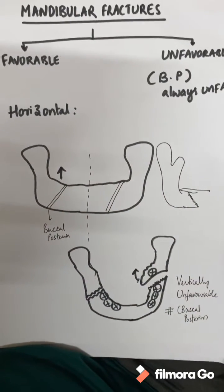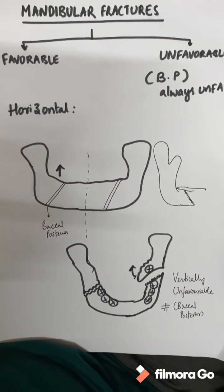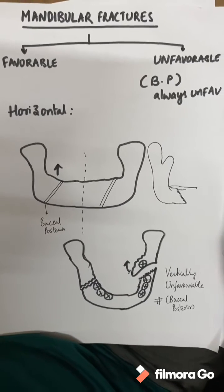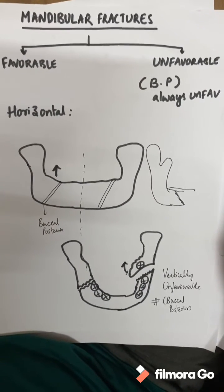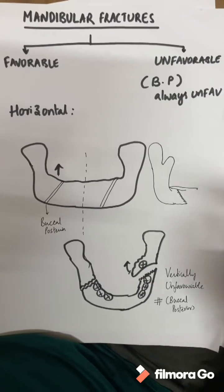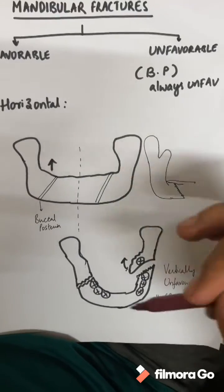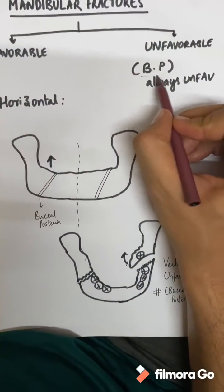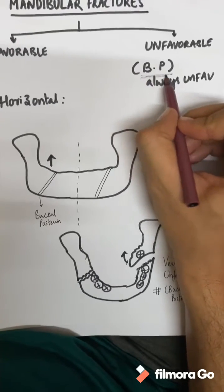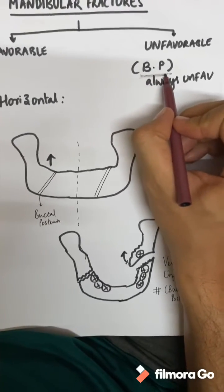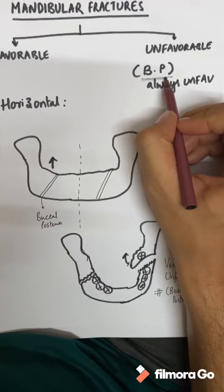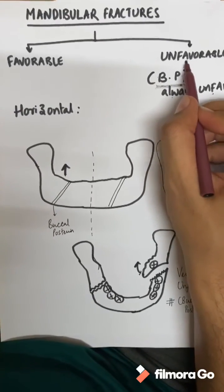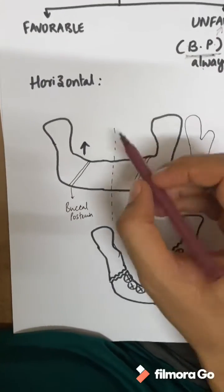This is one of the most confusing parts for students: mandibular fractures — what is favorable, what is unfavorable. Remember just one point and you will remember the entire thing. That one point is BP. The person who has BP, or is always shouting, is always unfavorable. So BP is unfavorable.